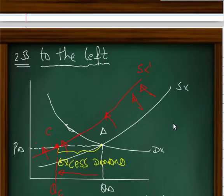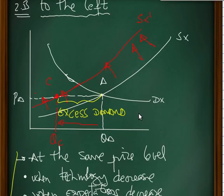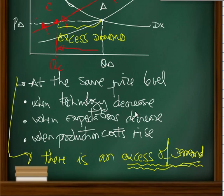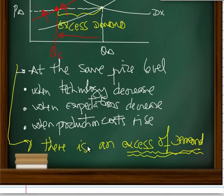And finally, if the supply shifts to the left at the same price level, it is because technology decreases, expectations decrease, or production costs rise. In this case, there is a decrease of demand.